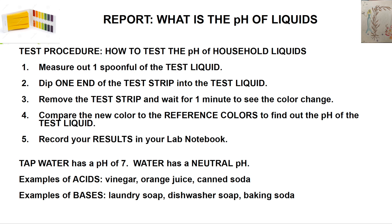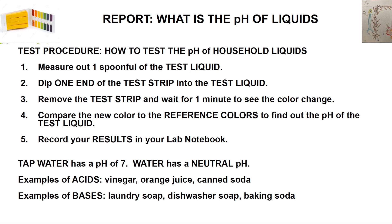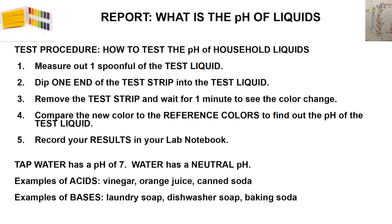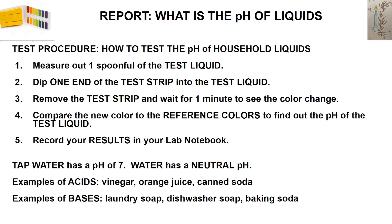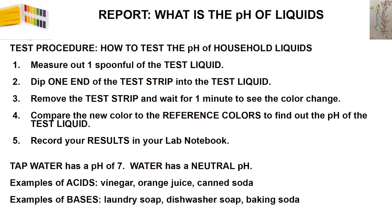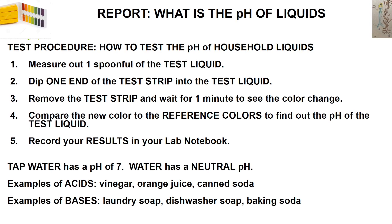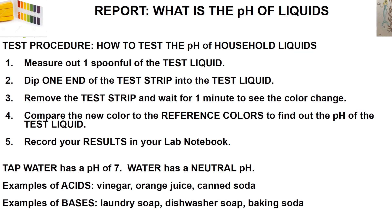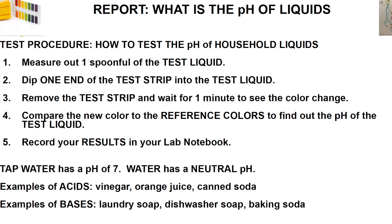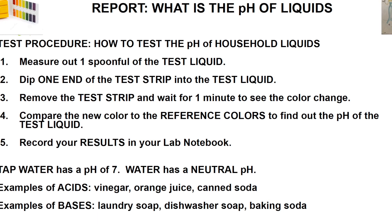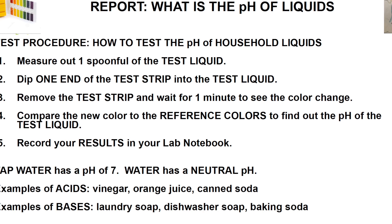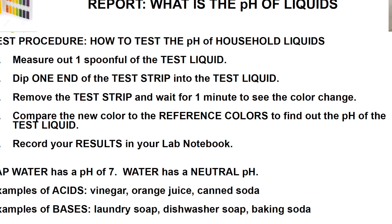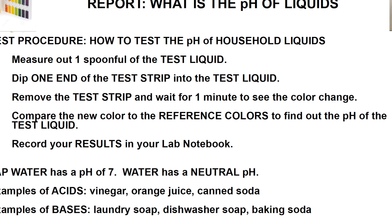This is our test procedure. First, we'll put out a small amount of the test liquid. Dip one end of the test strip into the liquid. Remove the test strip and wait for a minute to see the color change. Then we'll compare the color to reference colors to find out the pH of our test liquid, and then you'll write your result in your lab notebook. Tap water usually has a pH of 7, but it can range anywhere from 6 to 8. Some examples of acids you might test are vinegar, orange juice, and canned soda. Some examples of bases you could try would be laundry soap, dishwasher soap, and baking soda.